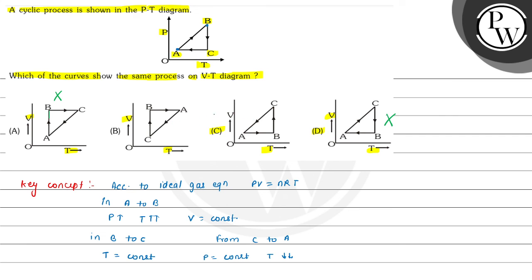That means option C is the correct choice for this question — this matches the P-T curve. Hope you understood it well. All the best and thank you.